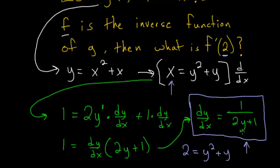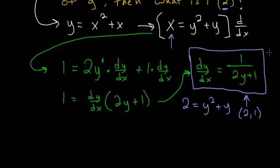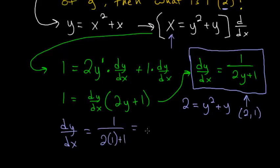Essentially we have to evaluate this derivative at the coordinate 2 comma 1. So dy dx equals 1 over 2 times 1 plus 1, and the denominator will simplify to 3. Our derivative of y with respect to x is 1 over 3, and this is our final answer.